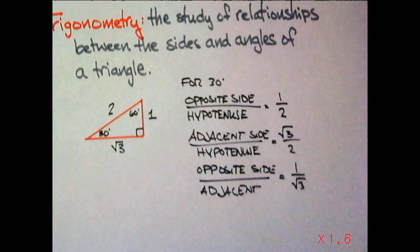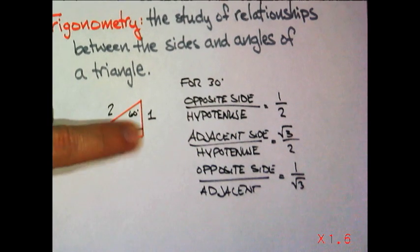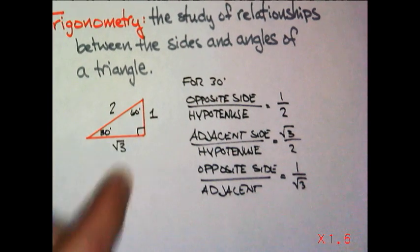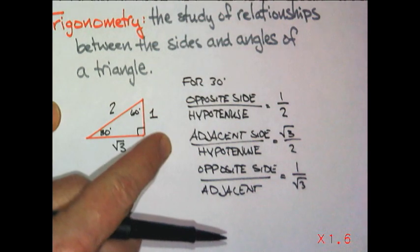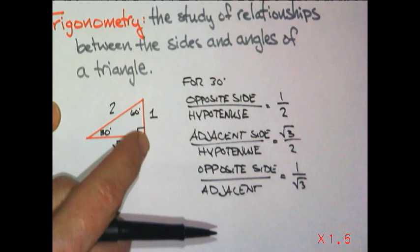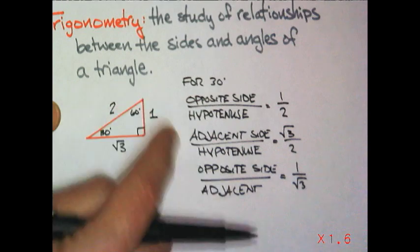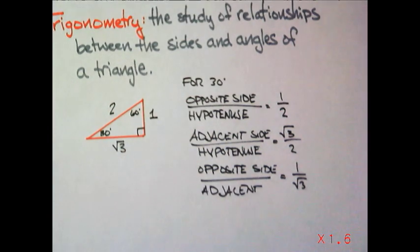Two little things you've got to remember. I have a right triangle. I have to maintain the right triangle. Because if I change that angle to an acute angle, that's no longer 1. That's no longer root 3. All those bets are off. So, we're going to stick with the right triangles and keep it simple.